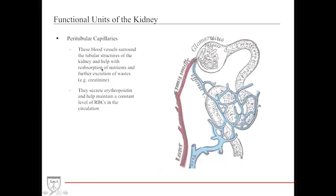The peritubular capillaries are blood vessels that wrap around the tubular structures of the nephron. They allow for reabsorption of certain electrolytes into the vasculature and further secretion of substances like creatinine into the renal tubules. These capillaries also produce EPO, which helps with RBC production.